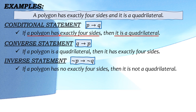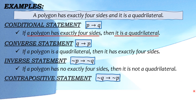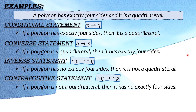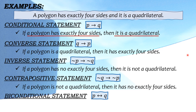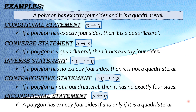So dito sa ating conditional statement, nagdagdag lang tayo ng word na 'no' — ibig sabihin 'has no', hindi exactly ang four sides. Then it is not a quadrilateral. Next is contrapositive statement or if negative Q, then negative P — ito ay kabaliktaran lang ng inverse statement. So magiging: if a polygon is not a quadrilateral, then it has no exactly four sides. And the last is the biconditional statement — magdadagdag lang tayo ng words na 'if and only if' doon sa ating given statement. So magiging: a polygon has exactly four sides if and only if it is a quadrilateral. Yung salitang 'and' ng ating statement ay pinalitan lang natin ng 'if and only if'.